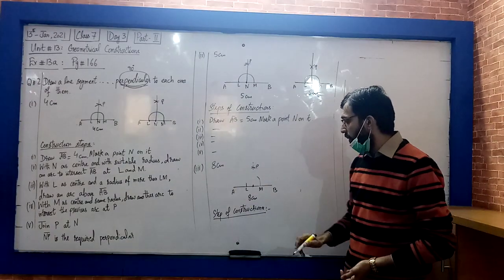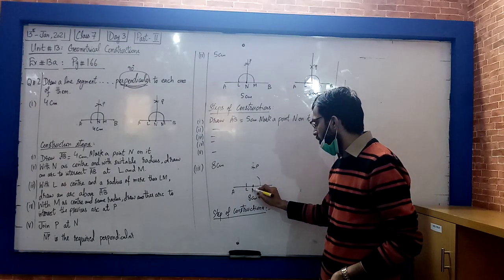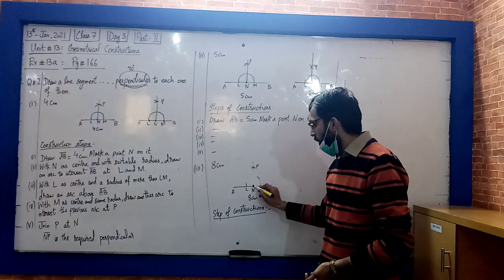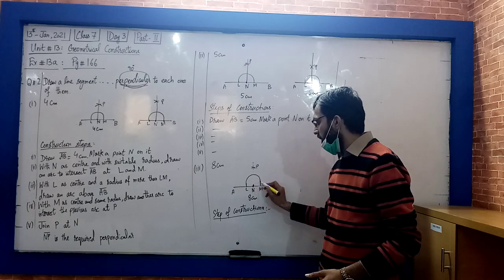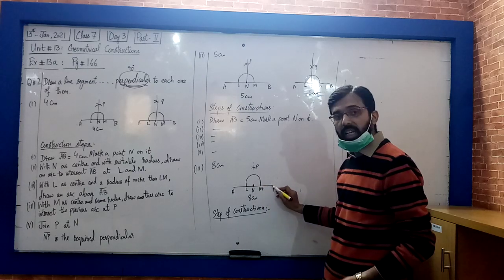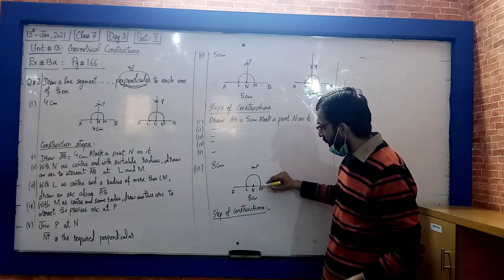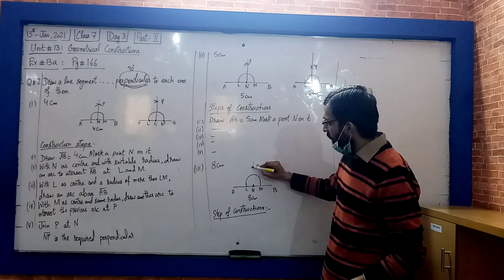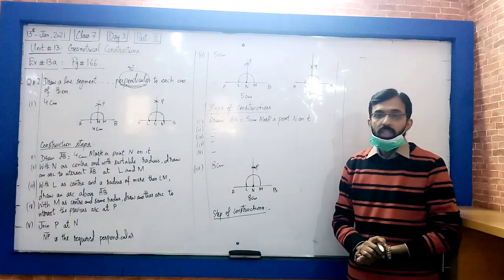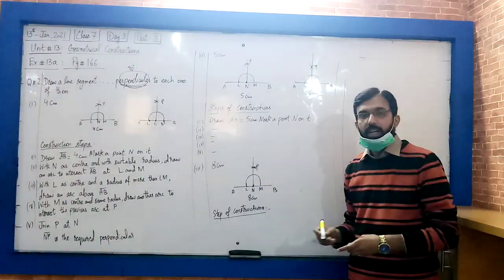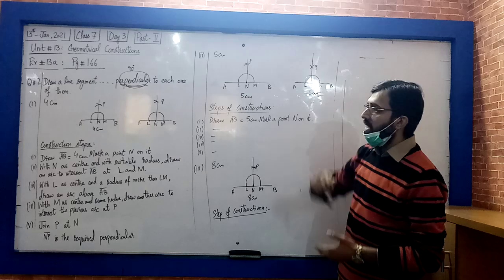Third part is 8cm. I draw an 8cm segment, then I choose N. I had the compass expand and draw a semi-circle. Now I cut the semi-circle from L and M points. Then join the points to draw the perpendicular MP.